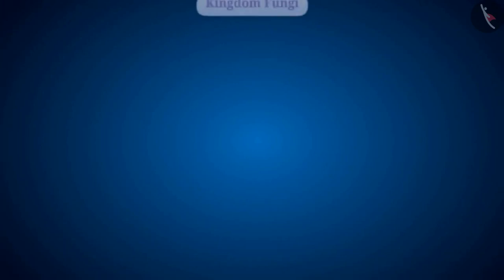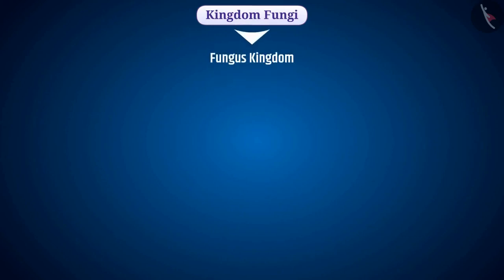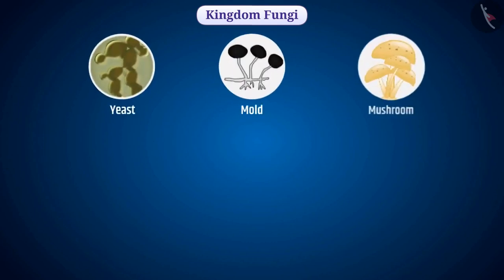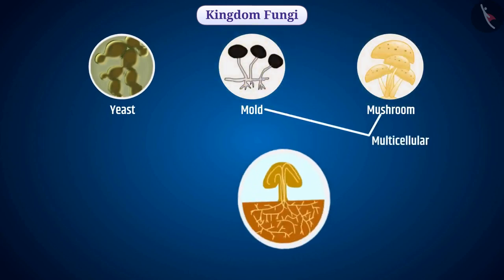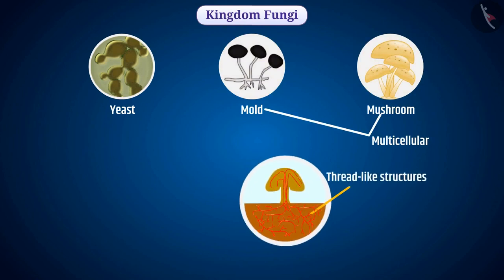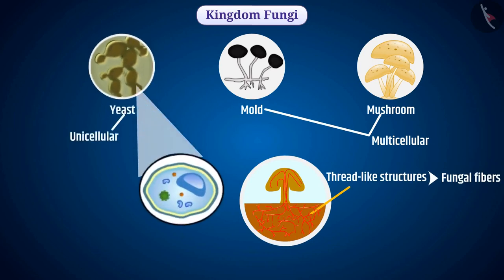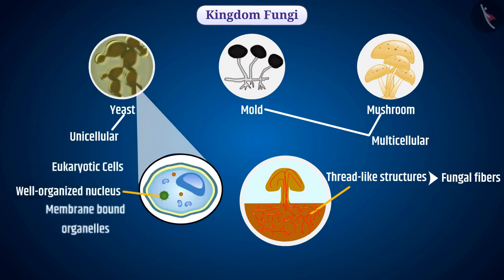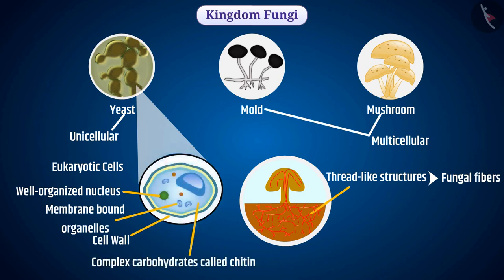Now let's discuss the kingdom Fungi, also called the fungus kingdom. It includes organisms like yeast, mold, mushroom, etc. Most fungi are multicellular, made up of long thin thread-like structures called fungal fibers, but yeast is unicellular. They are made up of eukaryotic cells with a well-organized nucleus and membranous cytoplasm. Their cells contain cell walls made up of complex carbohydrates called chitin.